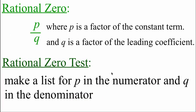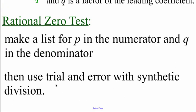Solving might be easy when looking at a linear or quadratic function, but once we get up to bigger, more complicated functions, we have to use something called the rational zero test. To find rational zeros, we look at p values — factors of the constant term at the end of our function — over q values, which are factors of our leading coefficient. We make a list of all p factors and all q factors, then run trial and error using synthetic division. If we get a zero remainder at the very end, that means that thing is a factor.